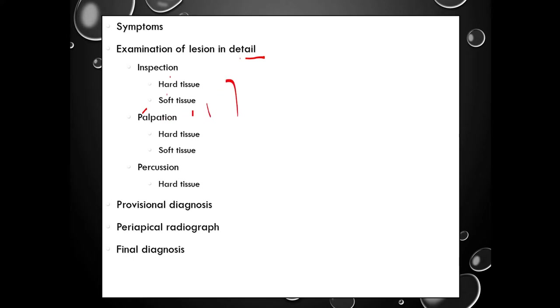Next is palpation. In the palpation, for hard tissue, we will pass the probe lightly along the base of the caries and see if it is soft or hard or if there is any tenderness. Remember not to puncture the roof of the pulp when you pass the probe. In the soft tissue examination, using the finger, you will palpate the buccal vestibule or lingual vestibule and see if the patient feels tenderness.